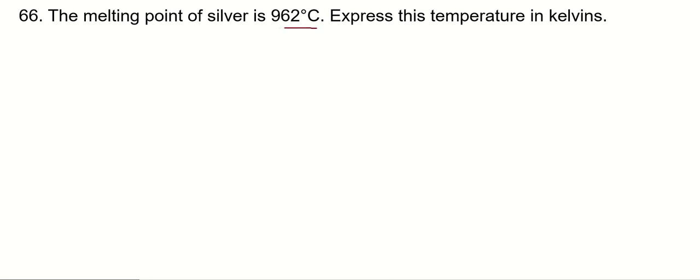So we're given a temperature in Celsius and asked to convert that to Kelvin. The Kelvin and Celsius scales are shifted by 273.15, so we can use this formula: Kelvin is degrees Celsius plus 273.15.